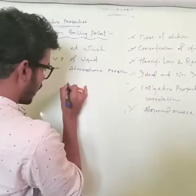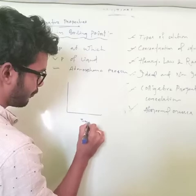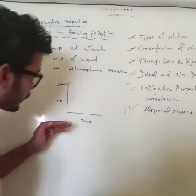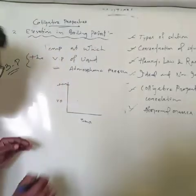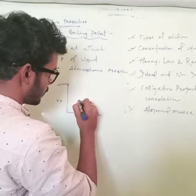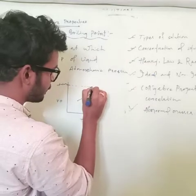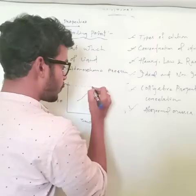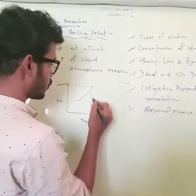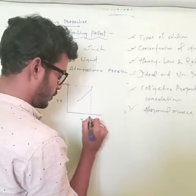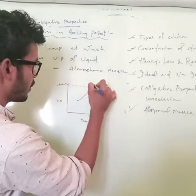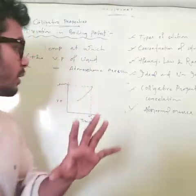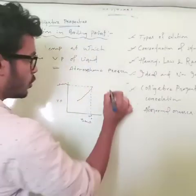If you plot a graph of vapor pressure versus temperature, suppose this is one atmospheric pressure. You take a solvent and start increasing temperature — the vapor pressure increases until at a particular point it reaches atmospheric pressure and starts boiling. This boiling point is TB⁰ for the pure solvent.